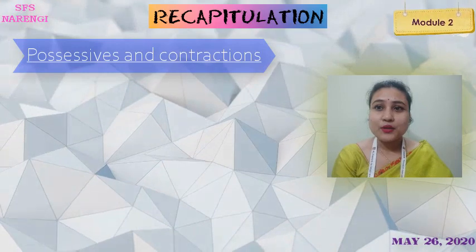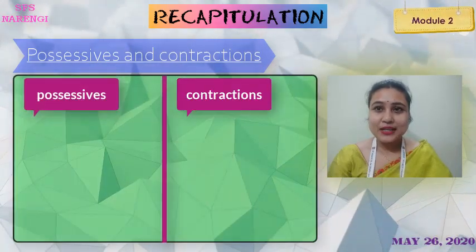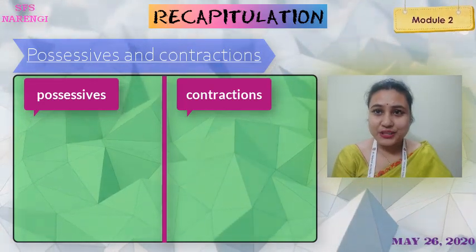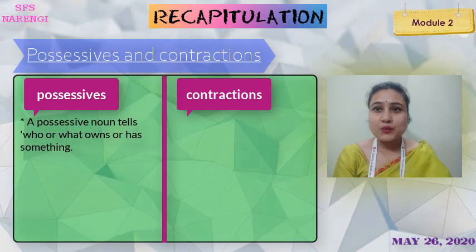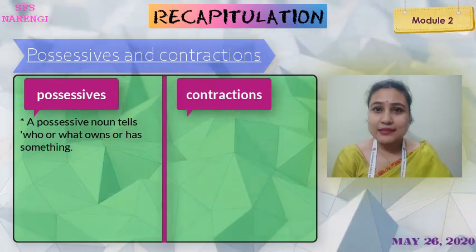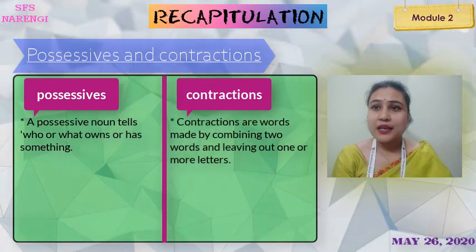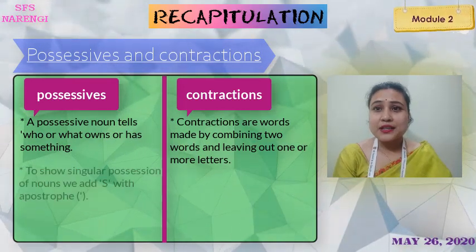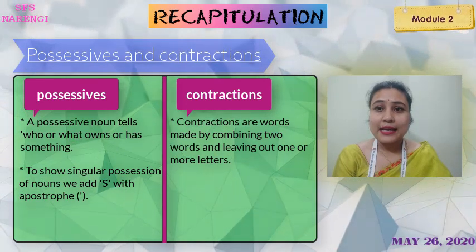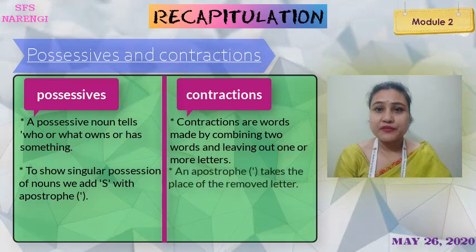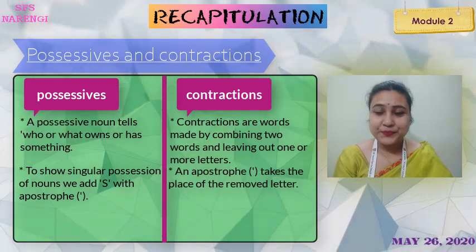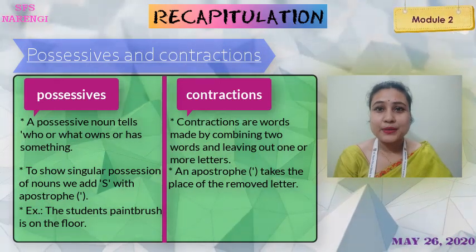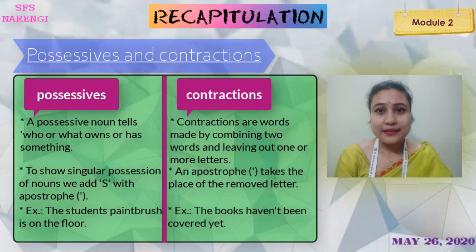Now let's see the difference between possessives and contractions. I have made two columns — one for possessive and the other for contraction. A possessive noun tells who or what owns or has something. Contractions are words made by combining two words or leaving out one or more letters. To show singular possession of nouns, we add apostrophe S. In a contraction, an apostrophe takes the place of the removed letter. Example for possessive: 'The student's paintbrush is on the floor.' Example for contraction: 'The books haven't been covered yet.'